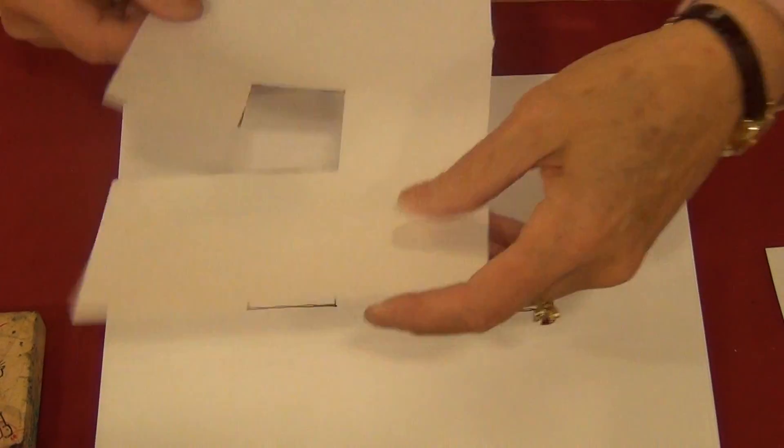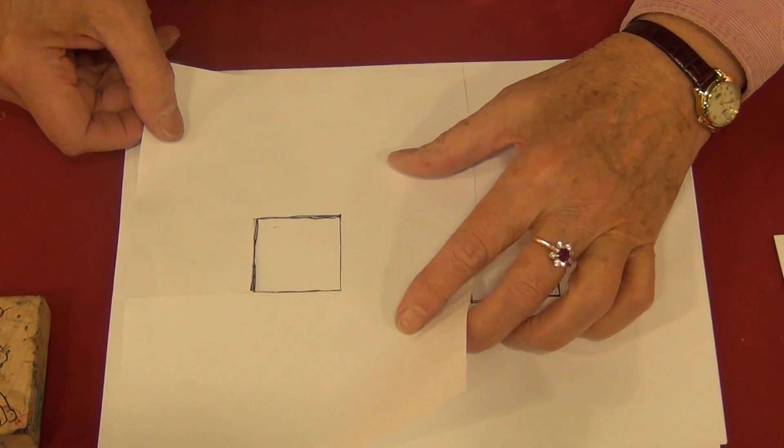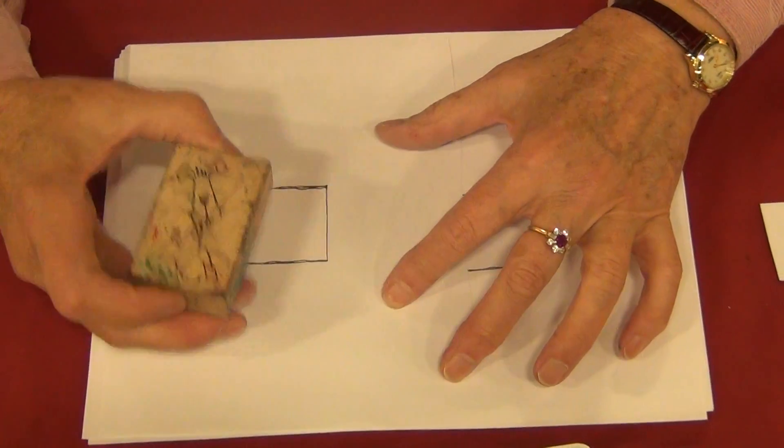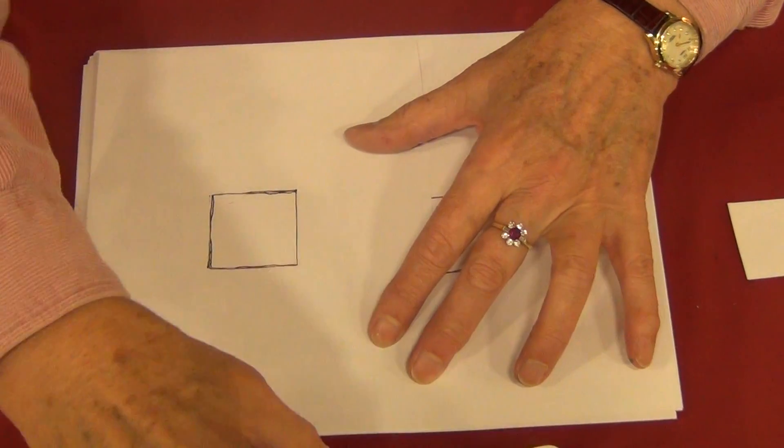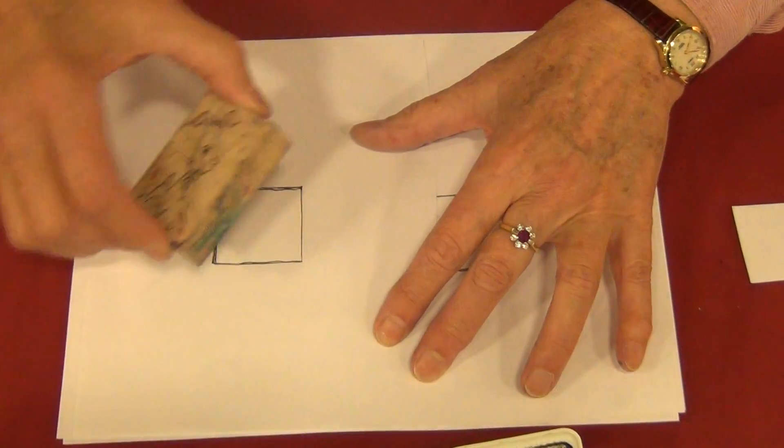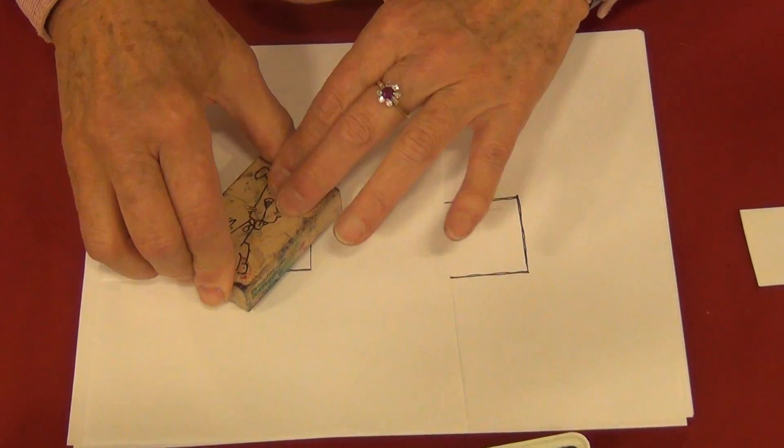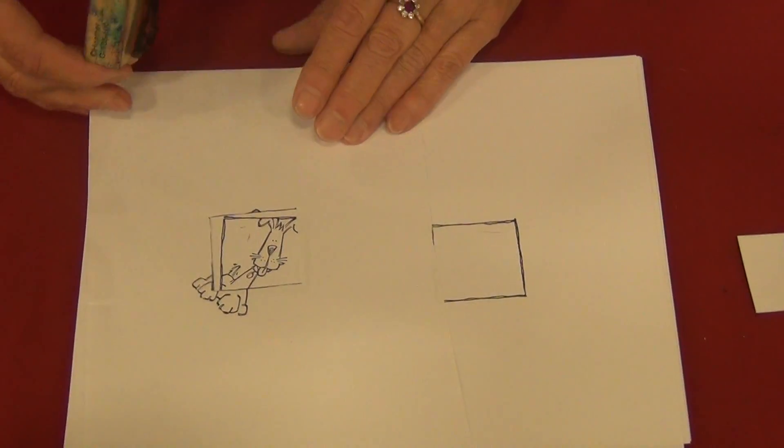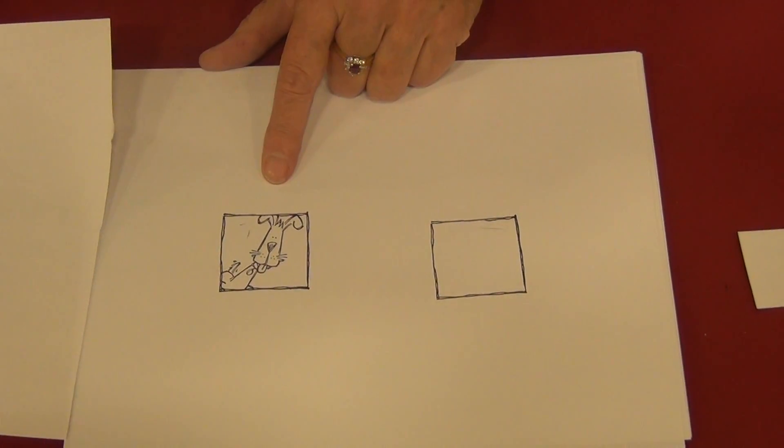So what you do is take this, lay it over where you stamped it, take your thing that you're going to put in it - I'm going to put this little puppy in it - and put it over it. When you remove it, he's inside.